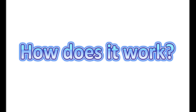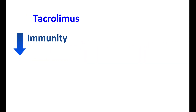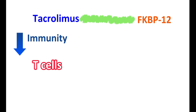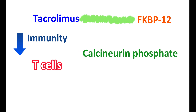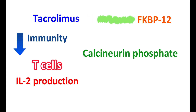Tacrolimus works by suppressing the immunity, thereby facilitating organ transplantation and reducing organ rejection. One of its main actions is to reduce the signaling of T-cells within the immune cells. Tacrolimus can bind to a protein called FKBP12 — the FK binding protein type 12 — and tacrolimus forms a complex with this protein.